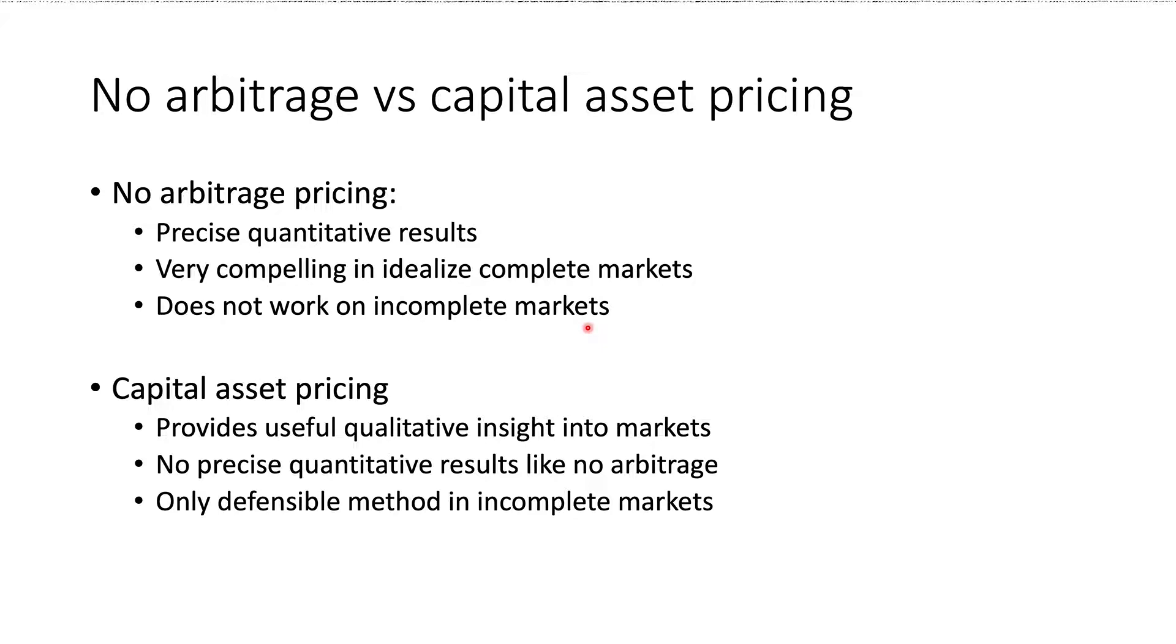On the other side, we have the capital asset pricing model. And for this model, it can give very useful qualitative insight into markets. However, because it's mostly qualitative, it does not provide the precise quant result that we receive while using arbitrage pricing. And that's a downside. However, capital asset pricing can be the only defensible method when the markets are inefficient or incomplete. So that's why it's still a very useful method to use.